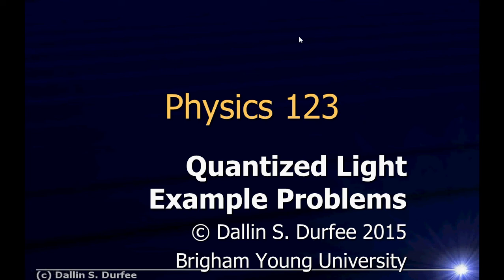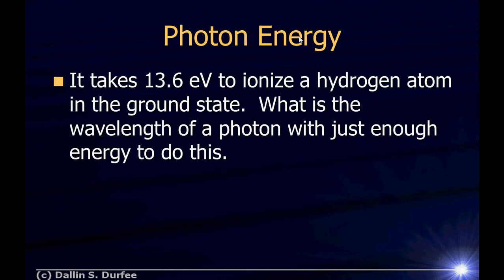Let's work some example problems with quantized light. First off, it takes 13.6 electron volts to ionize a hydrogen atom in the ground state. What is the wavelength of a photon with just enough energy to do this?